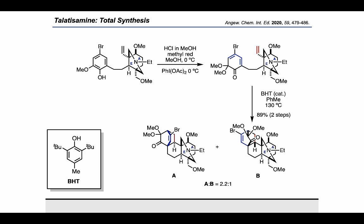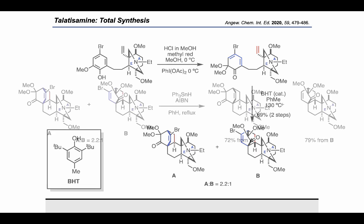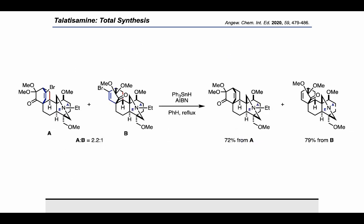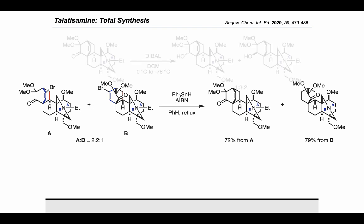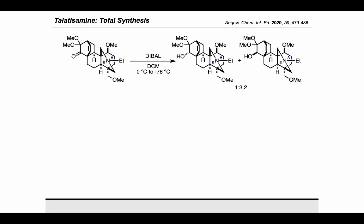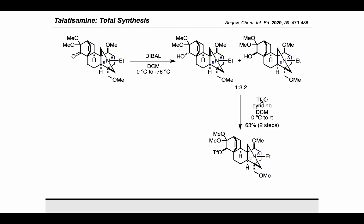The diastereoselectivity of the Diels-Alder reaction was rationalized by the proposal that diastereomer A, the major product, can be formed through a chair-like transition state, whereas diastereomer B, the minor product, would be formed through a higher-energy boat-like transition state. This mixture of diastereomers was subjected to radical debromination with triphenyltin hydride and AIBN, giving two products. Carrying on with the diastereomer on the left, DIBAL was used to reduce the ketone in 3.2:1 diastereoselectivity, then treatment with triflic anhydride gave the secondary alkyl triflate in 63% yield over two steps.